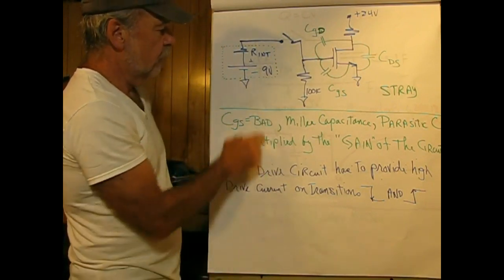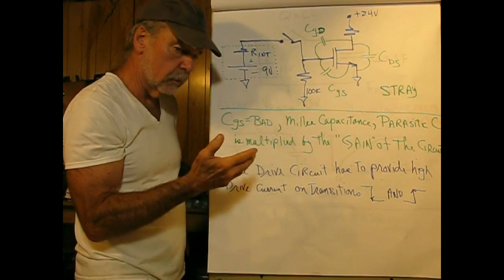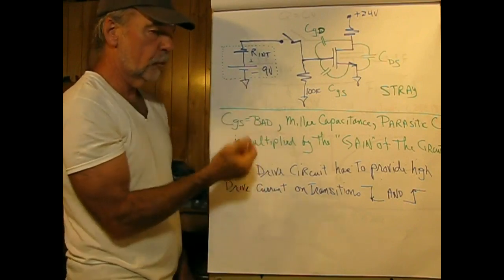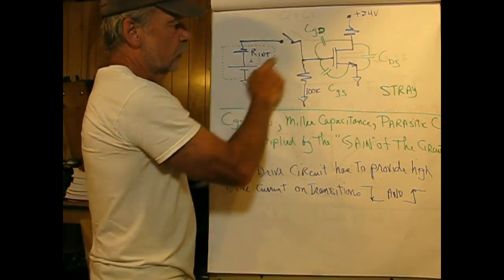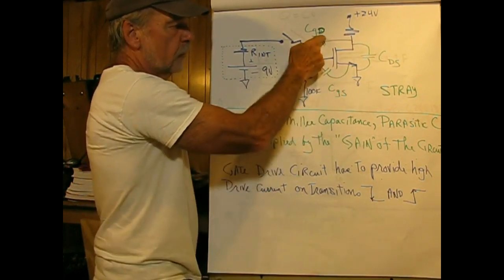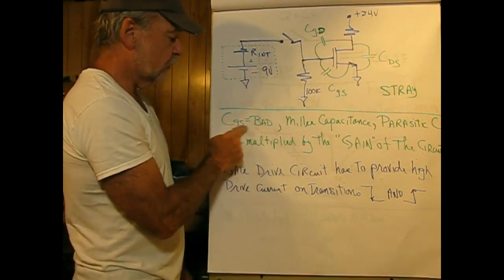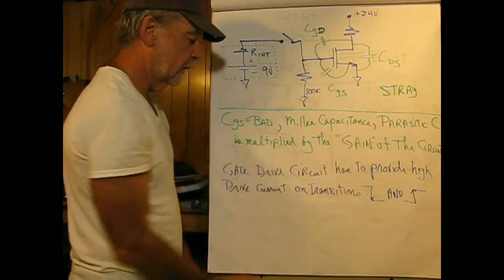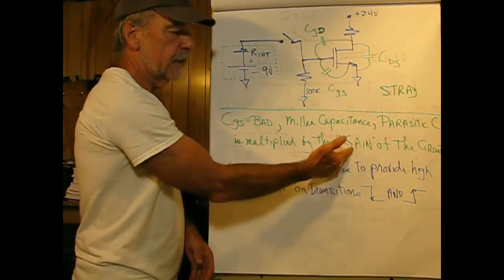If we have a source, I'll use a 9-volt battery as a typical power source with internal resistance. If I close the switch, this potential has to charge the gate-to-drain capacitor. This is the big one that's going to be a problem. C gate-to-drain is called Miller capacitance. It's parasitic, really not wanted, and it's basically multiplied by the gain of the circuit.